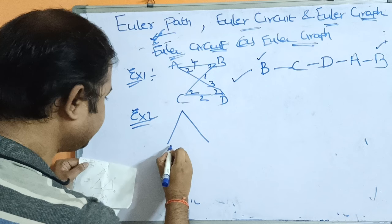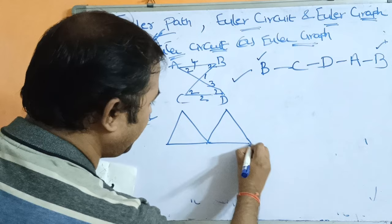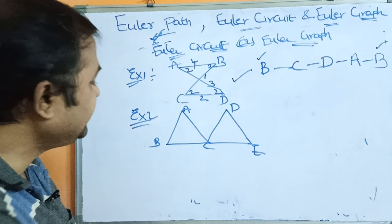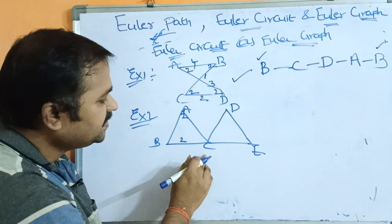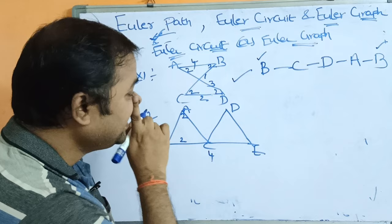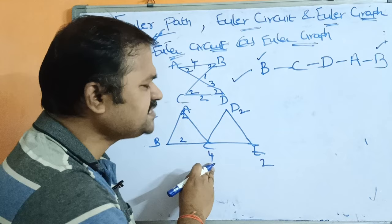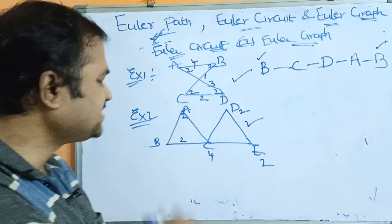Let us see Example 2. Check whether this graph contains Euler circuit — that means check whether it is an Euler graph. Let us find the degree of each vertex. Degree of A is 2, degree of B is 2, degree of C is 4, degree of D is 2, degree of E is 2. Every vertex degree is even — 4 is also an even number. So we can say this graph contains Euler circuit and is an Euler graph.